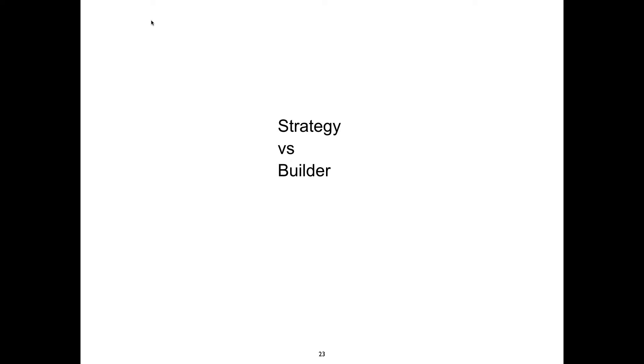I was looking at Strategy and Builder in more detail. In the book, Strategy only has one method, but I don't think that's a hard rule. If you didn't have the Builder pattern, I think you would say you were using the Strategy pattern. Another close one is you could also say you're using Template Method. I don't see any significant difference in the deployment — it's almost like a specialization of Strategy.